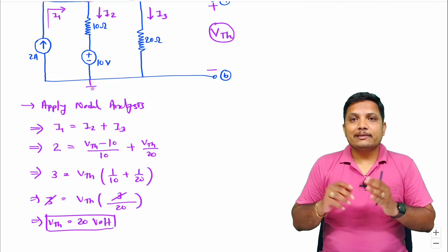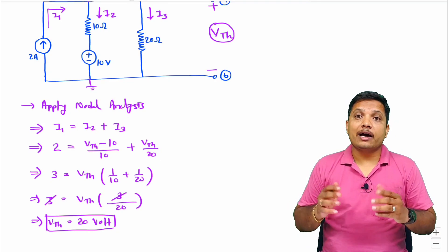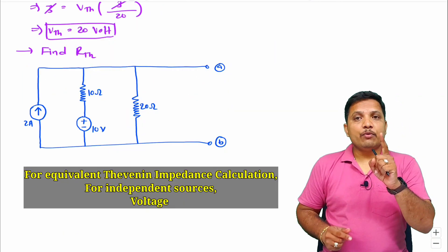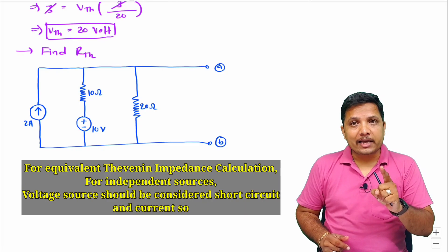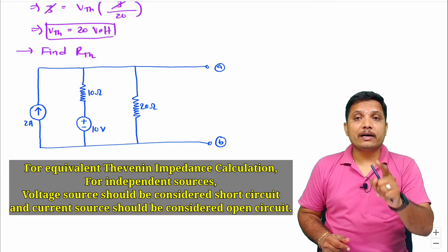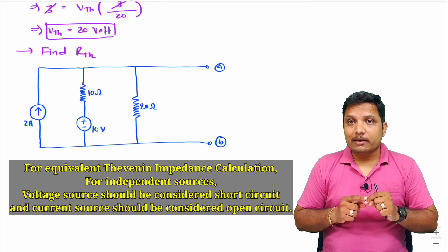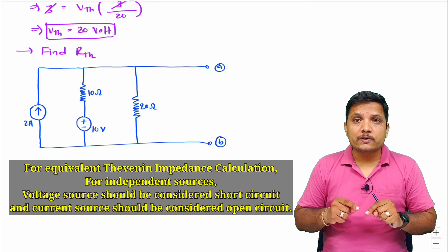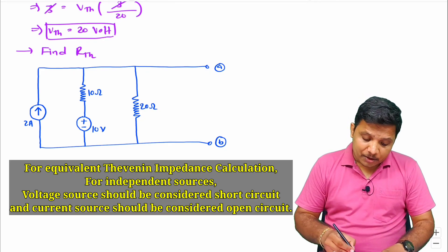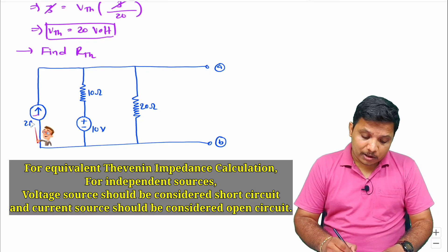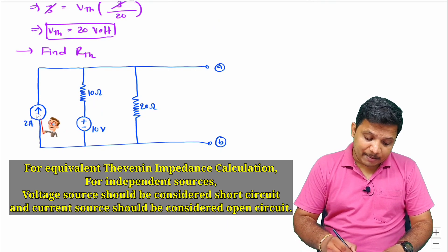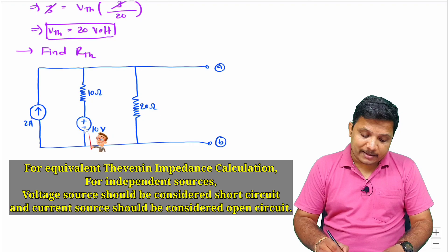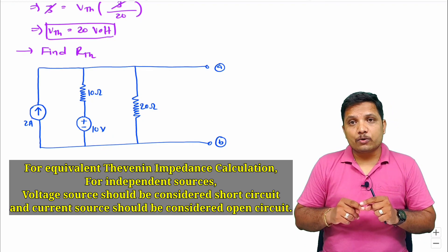Now let us calculate value of RTH. My dear students, whenever you want to calculate value of RTH, then you will have to see first what type of sources are given - is it independent source or dependent source? Now here you see we have independent source. 2 ampere current is independent source and 10 voltage battery is independent source.